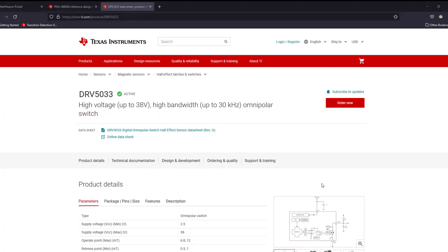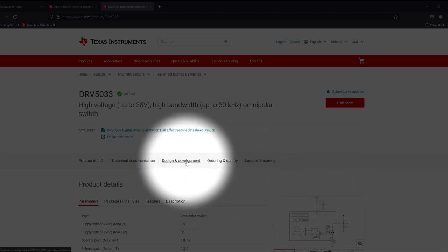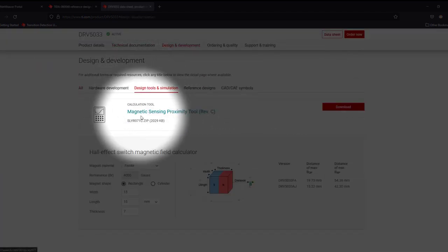To realize this goal, we can go to a Hall Effect sensor product page on TI.com, click Design and Development, and download the Magnetic Sensing Proximity tool.